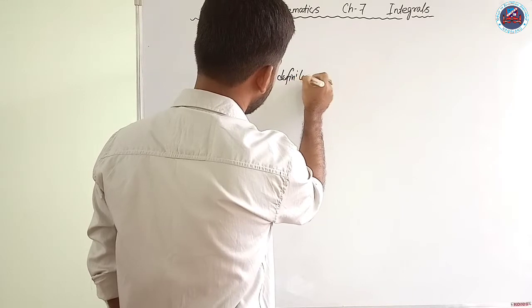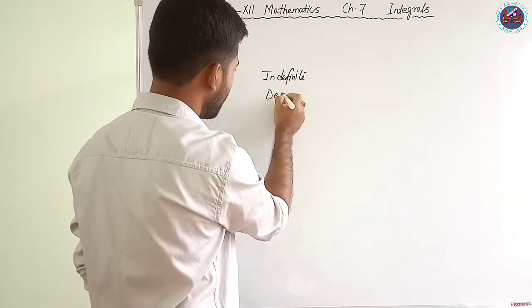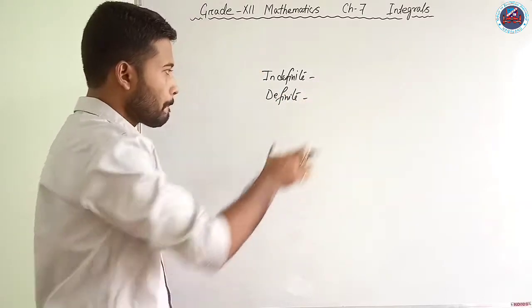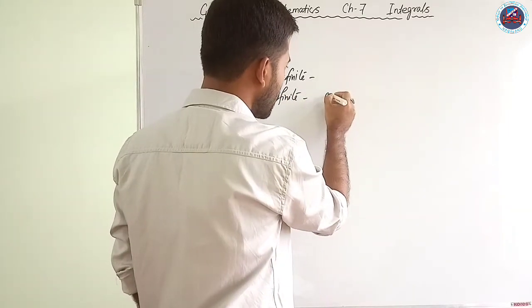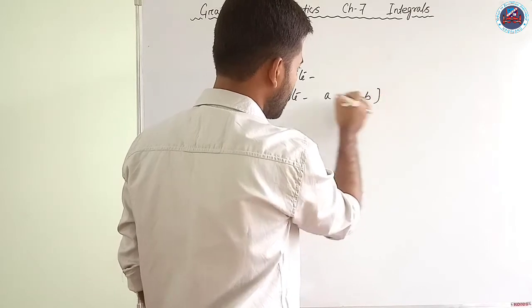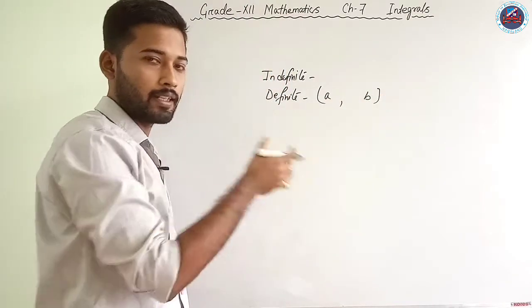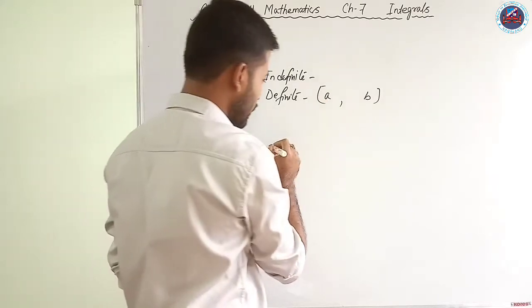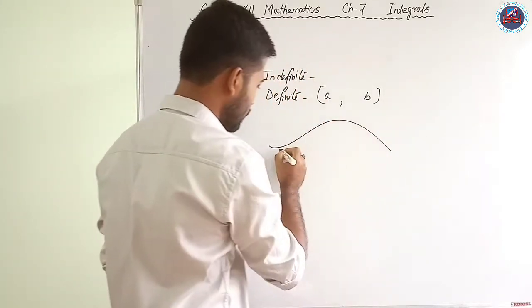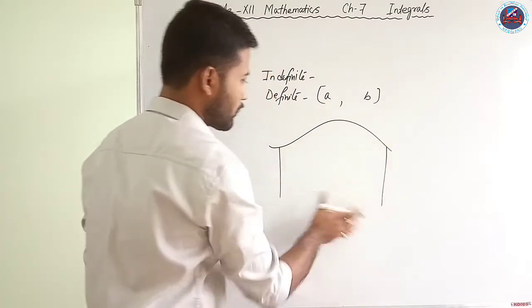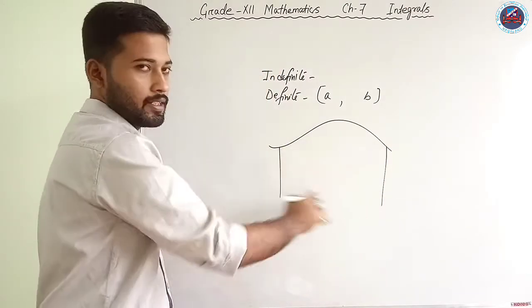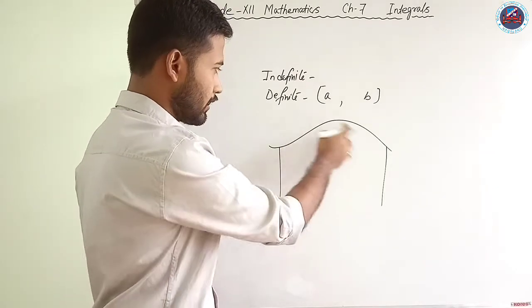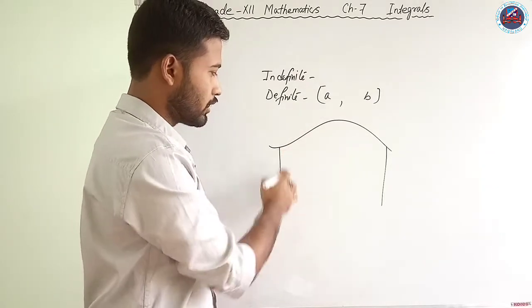In definite integration, two boundaries are given — basically a and b — and we need to find the integration inside that limit. A curve is given along with two boundaries, and we need to find the area enclosed by the boundary as well as the curve.